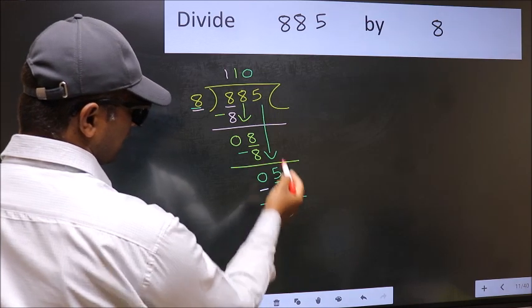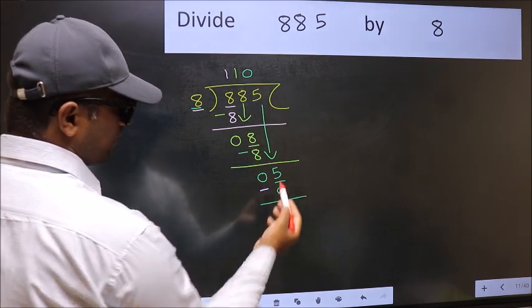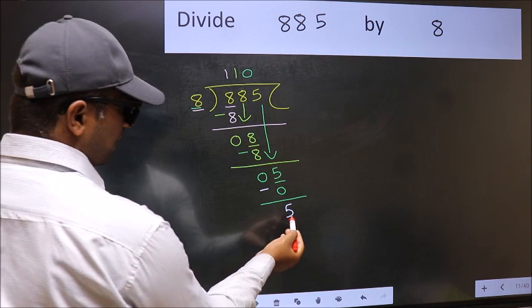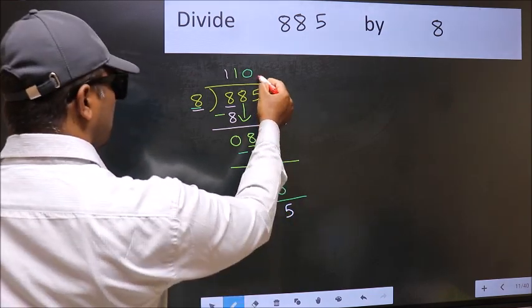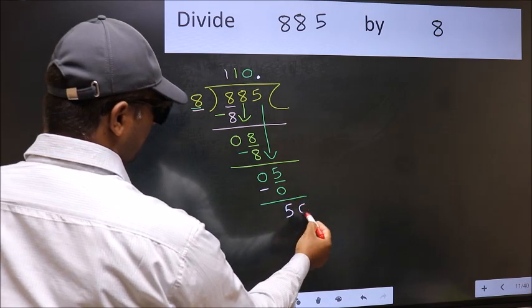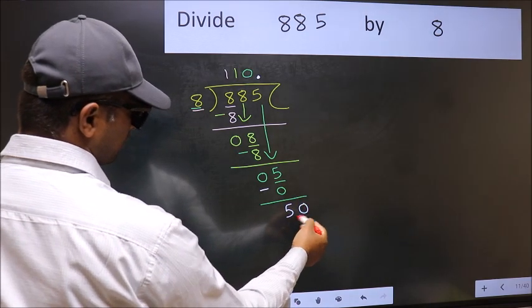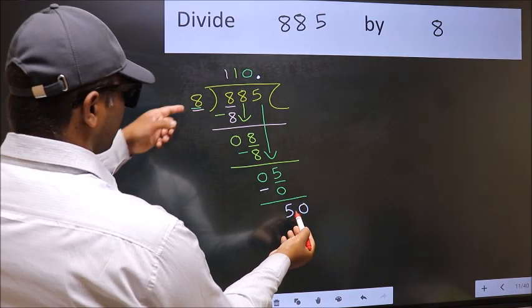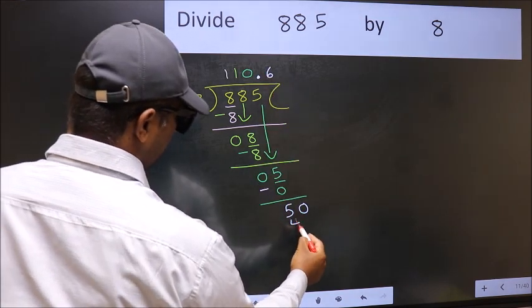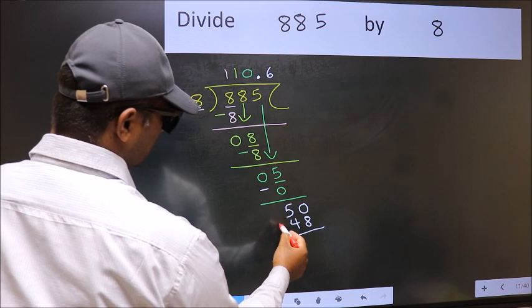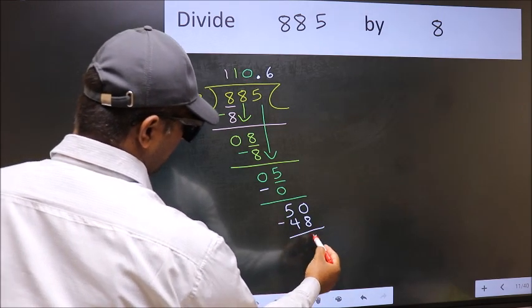Over here, we did not bring any number down, and 5 is smaller than 8. So now you can put dot and take 0. So 50. A number close to 50 in 8 table is 8, 6, 48. Now you should subtract. You get 2.